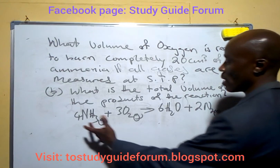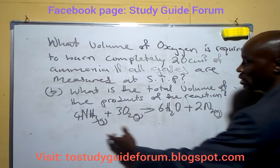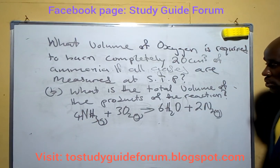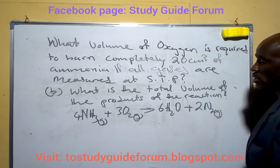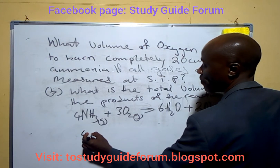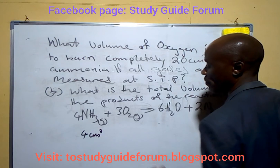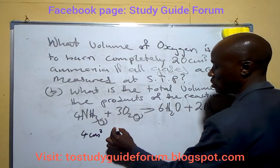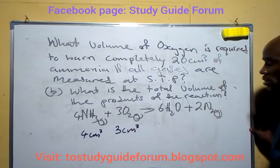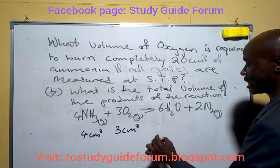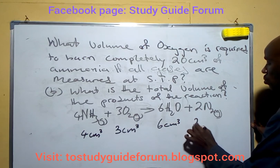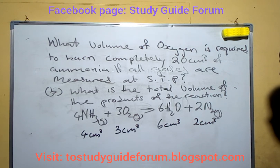Looking at this carefully, the coefficients in the equation tell us the ratio of combination. From those ratios we find that 4 cm³ of ammonia will combine with 3 cm³ of oxygen to give us 6 cm³ of steam and 2 cm³ of nitrogen.